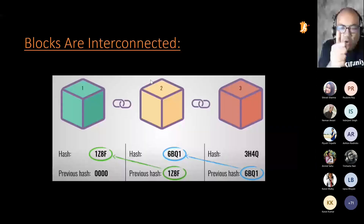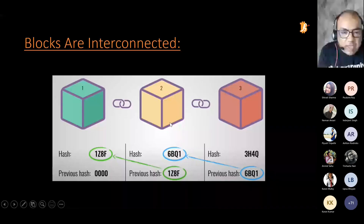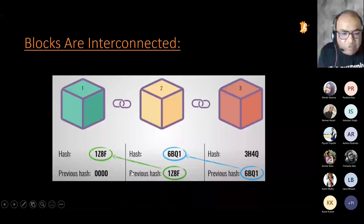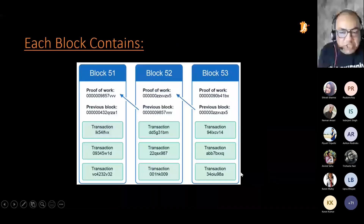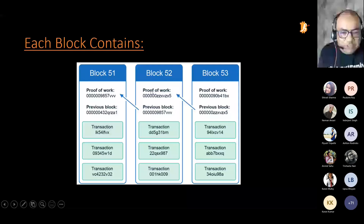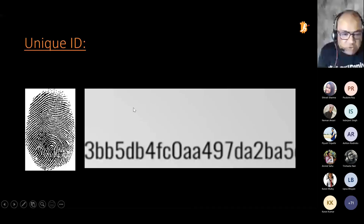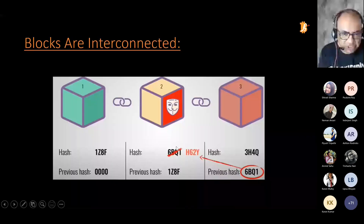The beauty is that the hash of one block is mentioned in the next block. So the hash of block number one is present in block number two — both are interconnected. The hash of block number two is mentioned in block number three, and so on. So if you try to change the hash of block number two, there will be a mismatch. If it was previously '6BQ1' and you change it, the entire network will know that some change has happened.